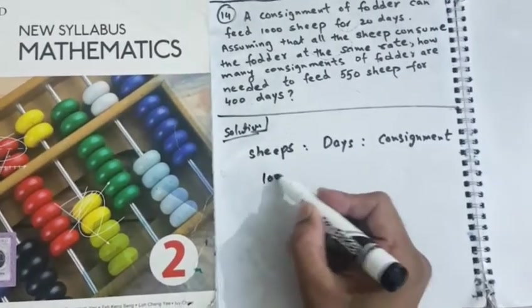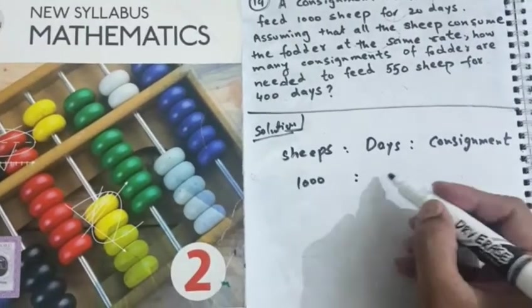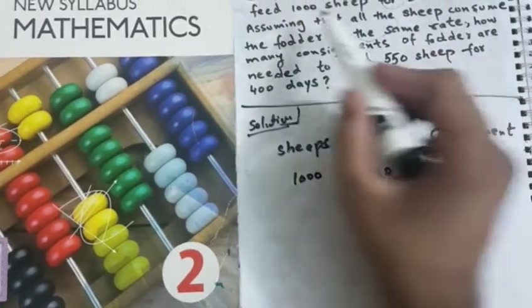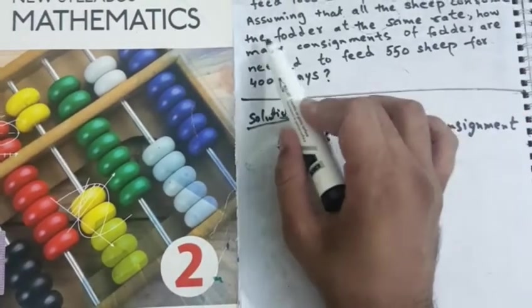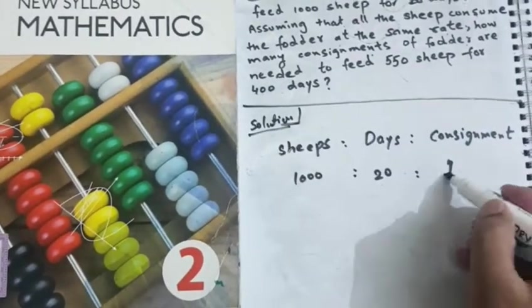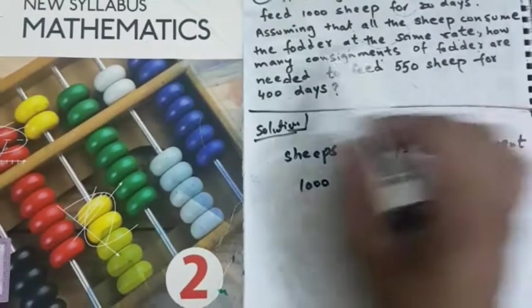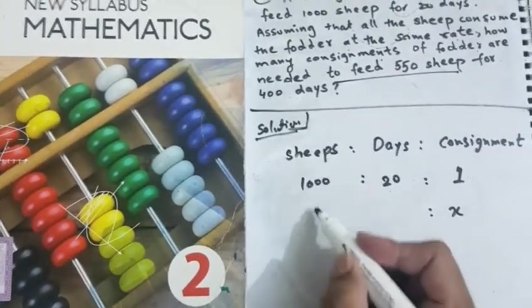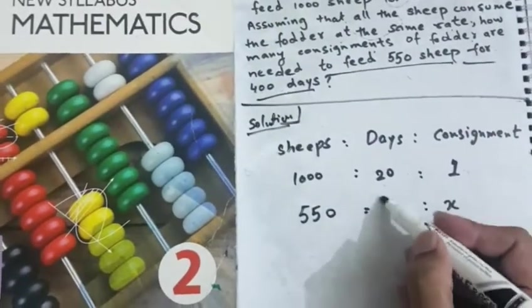When the sheep were 1,000, the days were 20, and the consignment was only one. A consignment of fodder can feed 1,000 sheep for 20 days. Assuming that all the sheep consume the fodder at the same rate, how many consignments of fodder are needed? That means consignment are demanded. We shall write X here. How many consignments of fodder are needed to feed 550 sheep? Just below the sheep, I shall write 550 for 400 days. Just below the days, I shall write 400.